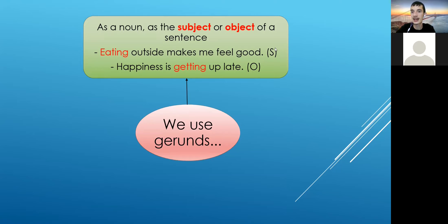What's the difference between two sentences here? So it says the first one is gerund and both of them are gerund, but here it says S, here it says O. Why? Right, so one of them is subject of your sentence. Eating outside makes me feel good. What makes me feel good? Eating outside. But here, happiness is getting up late, here it's our object. So what is our subject here? Happiness. Now okay, so now it's a different part. So this is using gerund as a subject and the second one is using gerund as object.